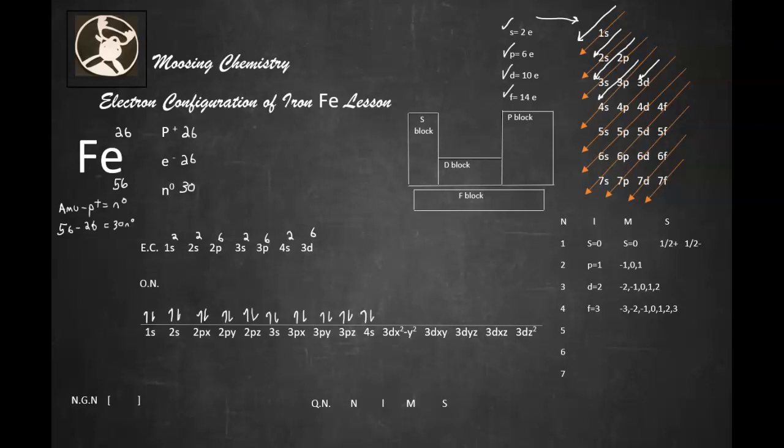4s, up arrow, and then down arrow. Now watch this. 3dx squared minus y squared, 3dxy, 3dyz, 3dxz, 3dz squared. So watch this. 1, 2, 3, 4, 5, and the sixth one goes right there.